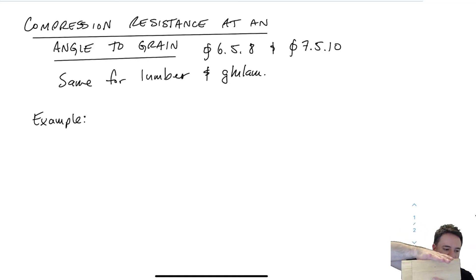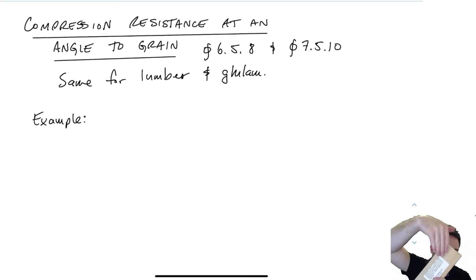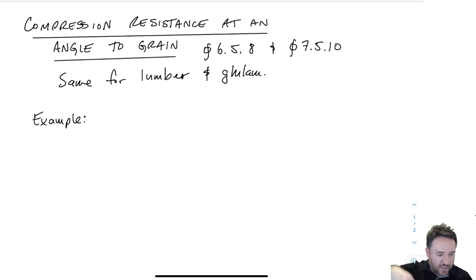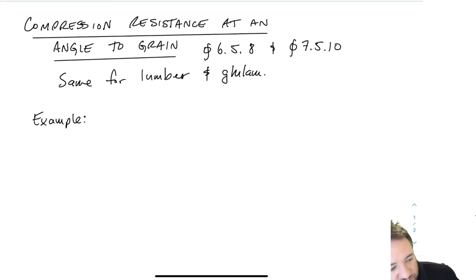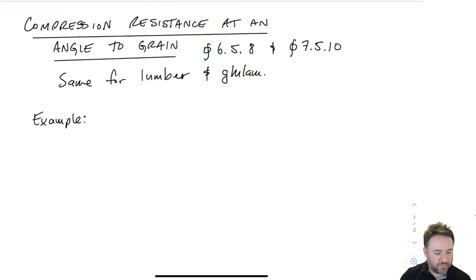If the load is applied this way or this way relative to the grain, I have a bearing strength to calculate. But what happens if I have neither of those pure cases and the load is applied at some angle to the grain — not aligned or perpendicular, but somewhere in between? To handle that, I need to apply some kind of interaction equation that takes into account both the resistance parallel and perpendicular to grain.